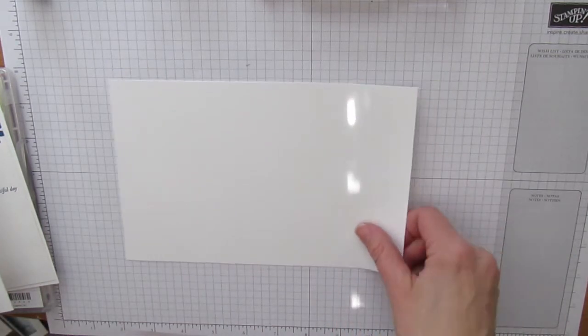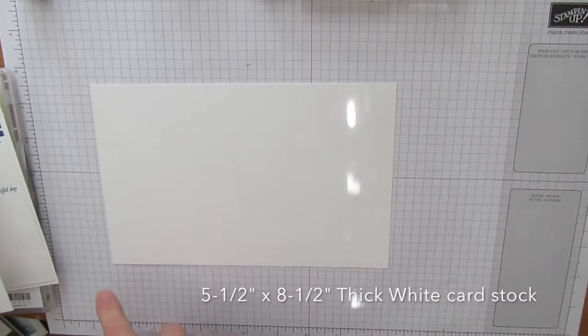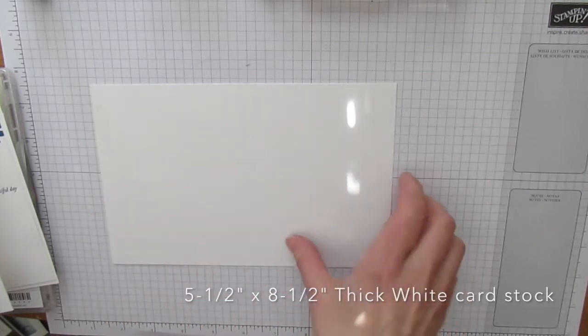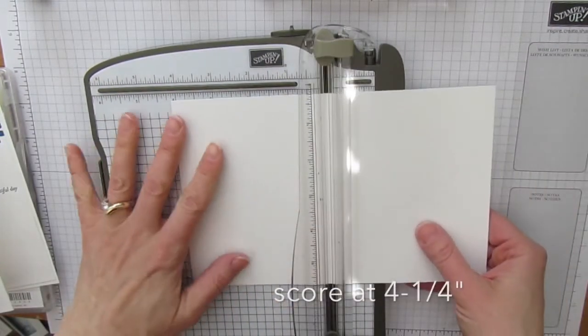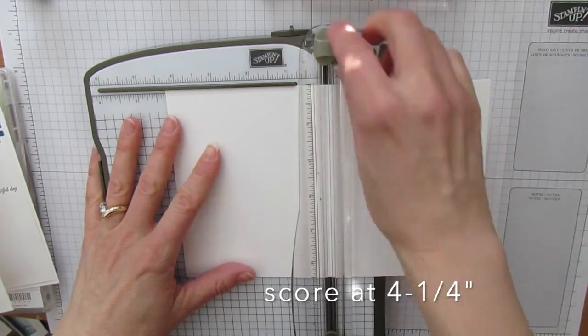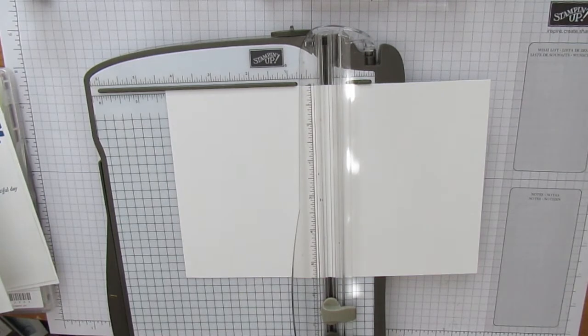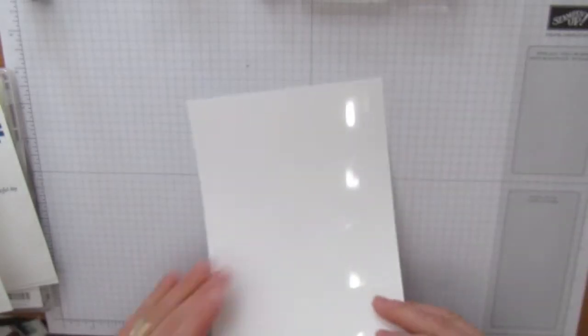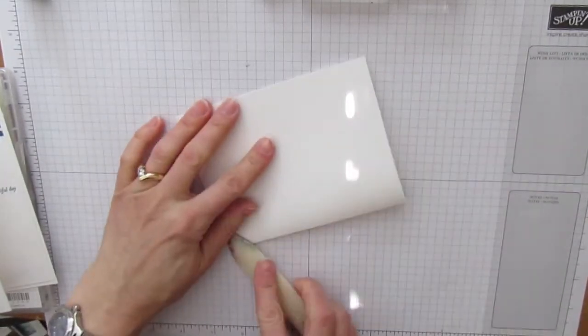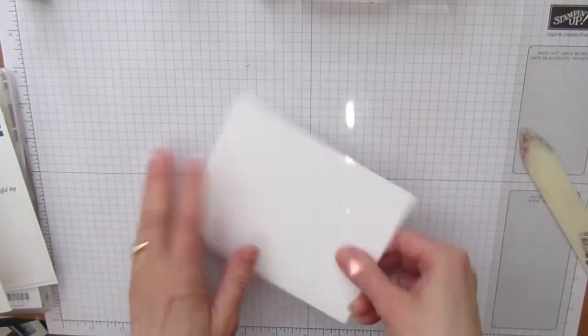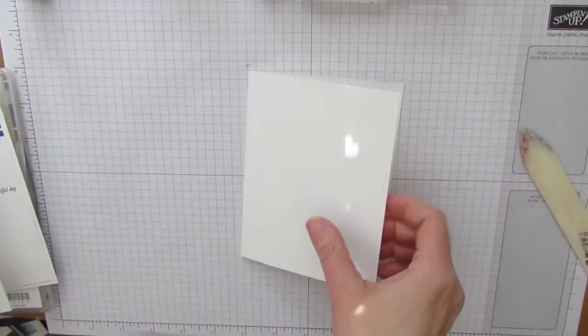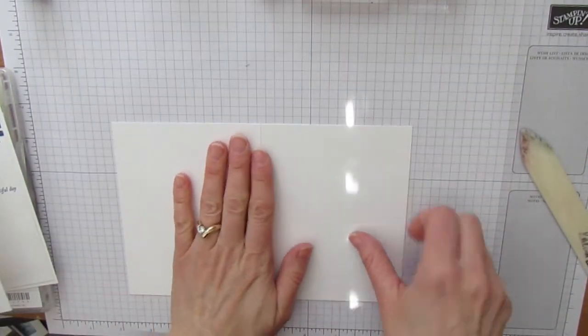First of all, I have already cut a card base. It is five and a half inches by eight and a half inches and I am just going to score it at four and a quarter inches. Then I'll pull that out and I'm just going to use my bone folder just to make a nice crisp crease, and then I'm going to do some stamping on it.